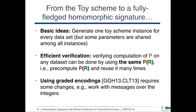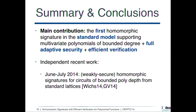A final note: if you want to instantiate the scheme using graded encodings, this requires some changes due to the discrepancy between graded encodings and ideal multilinear maps. For example, we have to work with messages over the integers because the plaintext space of the graded encodings is not public.